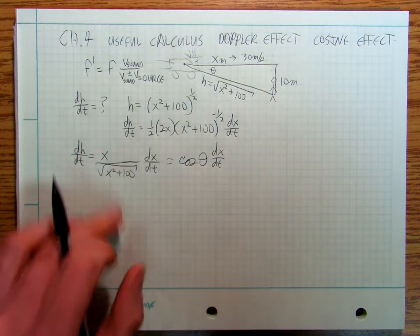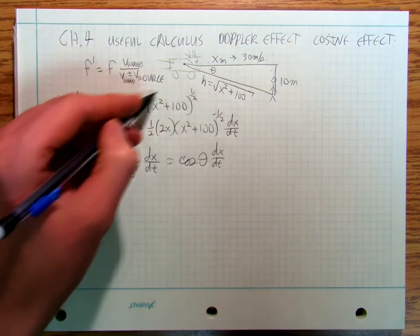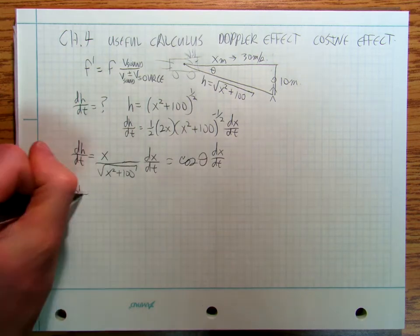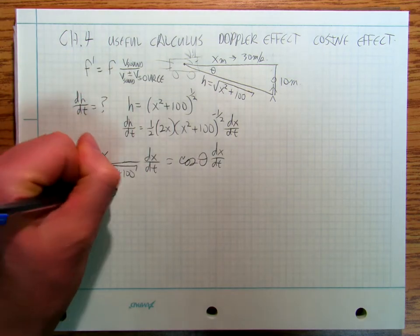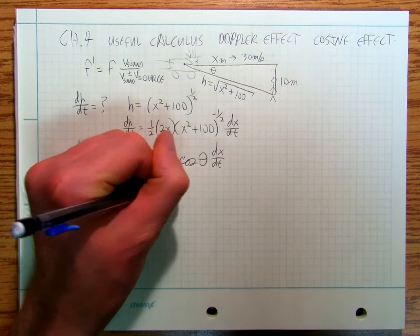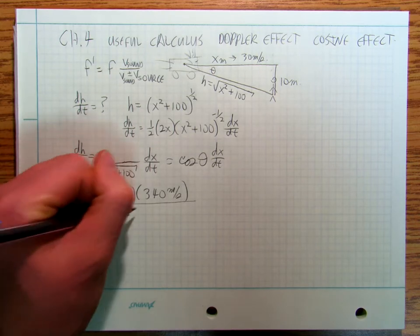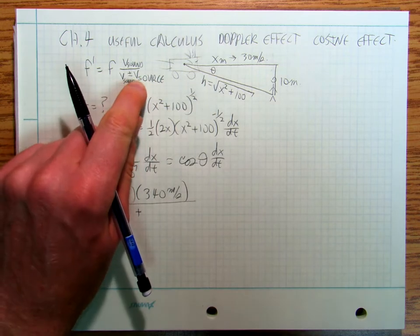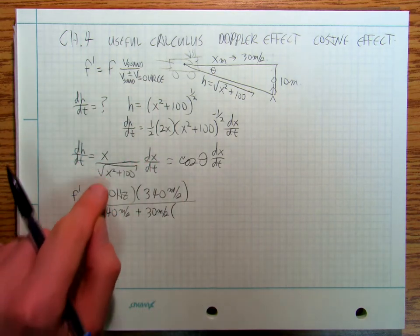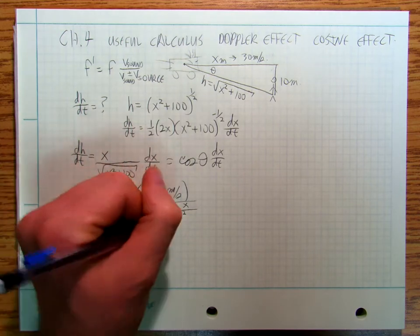Looking at the Doppler equation: this is the frequency that you hear, this is the frequency of the ambulance siren — let's say 500 hertz — and the velocity of sound is 340 meters per second. The velocity of the source is going to be 30 meters per second times the ratio x over the square root of x² + 100.